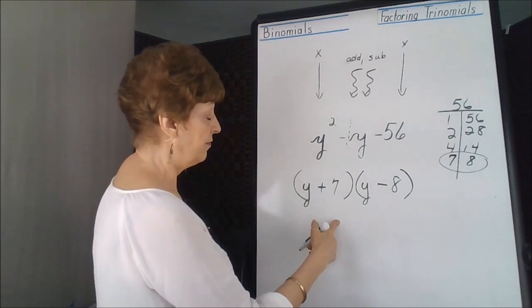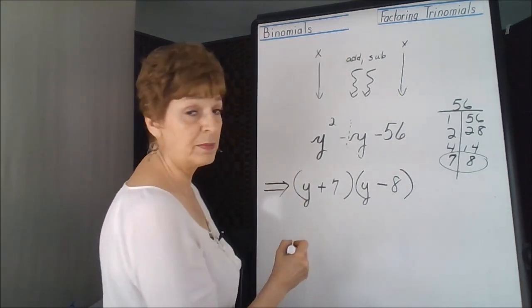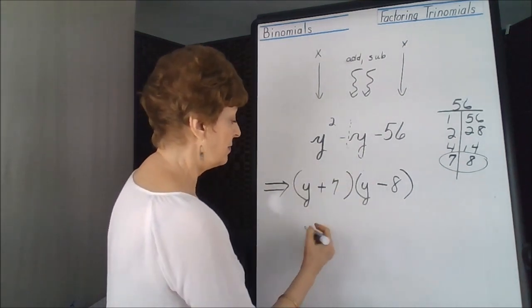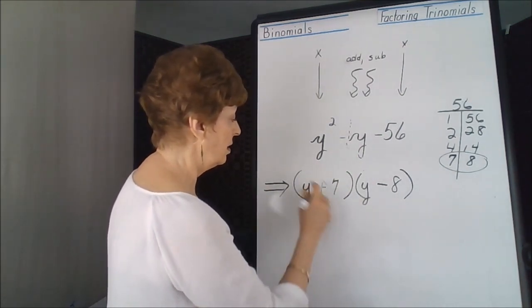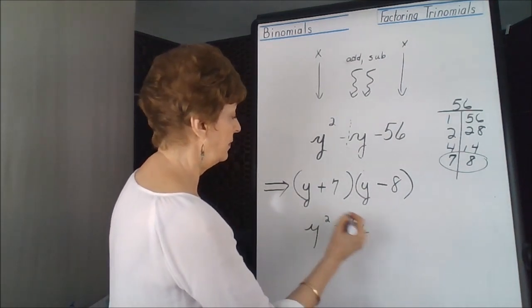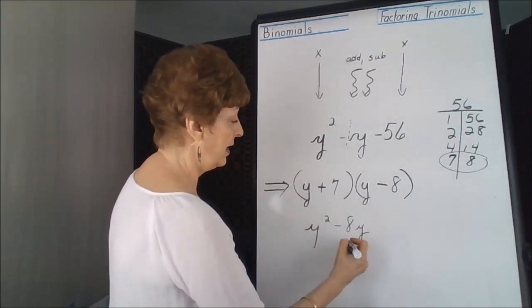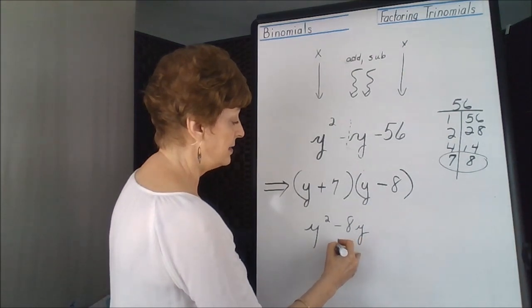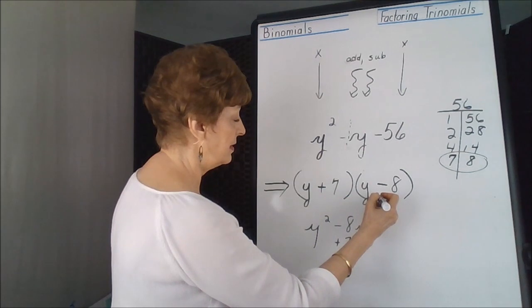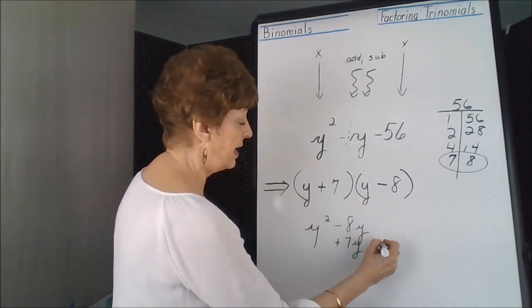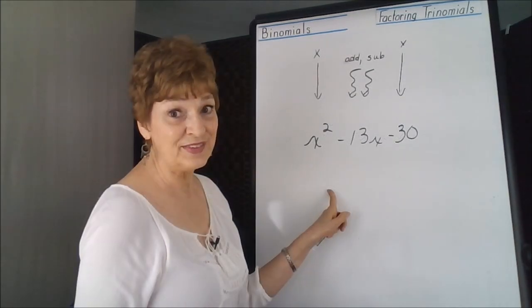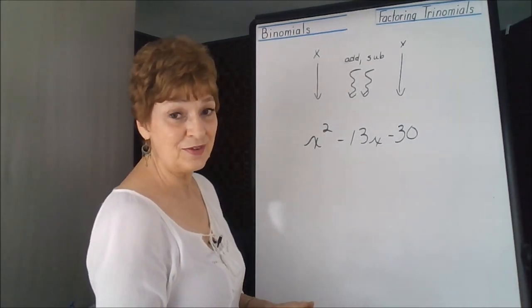We're going to factor it back because I want to be sure, and it doesn't take very long. y times y is y squared. y times a negative 8. 7 times y is positive 7y. And a positive times a negative is a negative 56. On any of these, you can pause the video and try it yourself before I actually teach it.